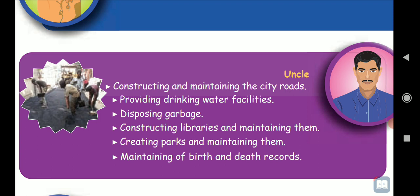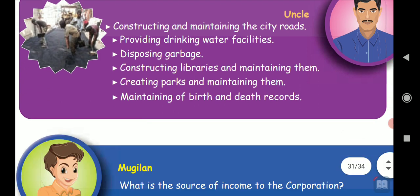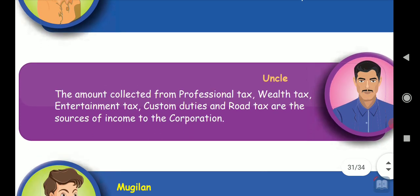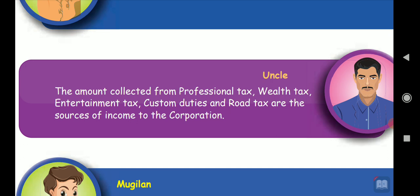Then Mughilan asked the next question: what is the source of income to the corporation? Uncle says: the amount collected from professional tax, wealth tax, entertainment tax, custom duties, and road tax are the sources of income to the corporation.